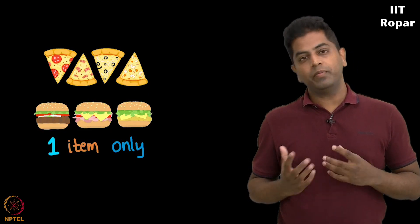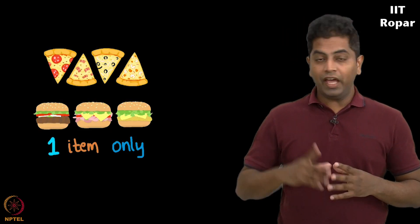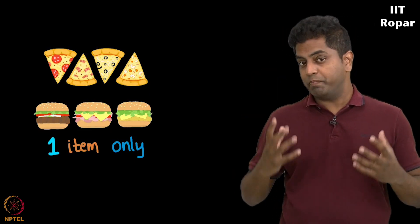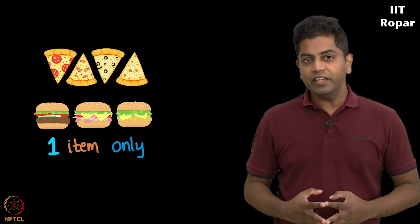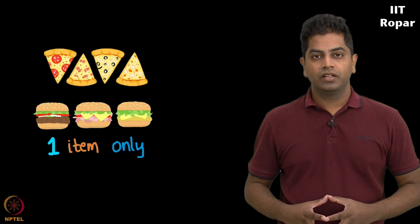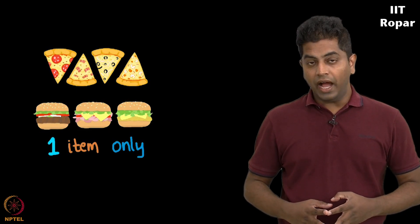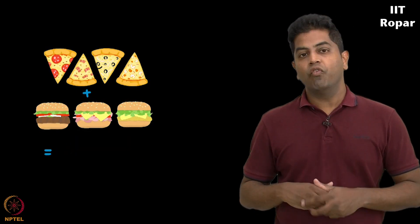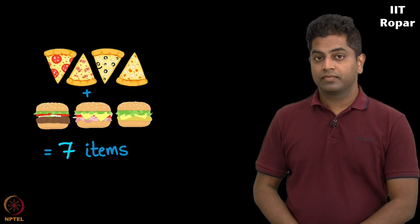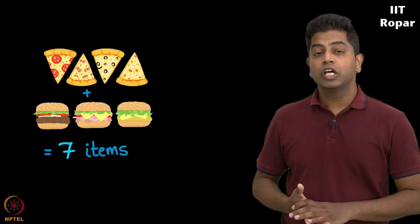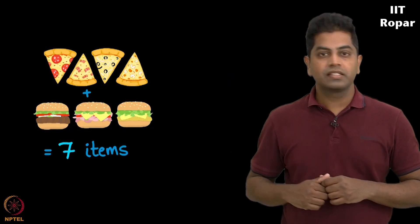Either pizza or burger. So I have four varieties to choose from pizza and three varieties from burger. So in total, I can order one of these seven items. One of these four plus three, seven items.